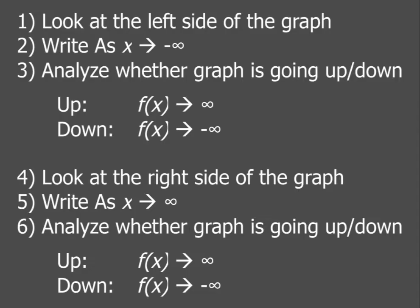Then you're going to analyze whether the graph is going up or down. If it's moving up, you're going to write f(x) approaches infinity. If it's going down, then you would write f(x) approaches negative infinity.